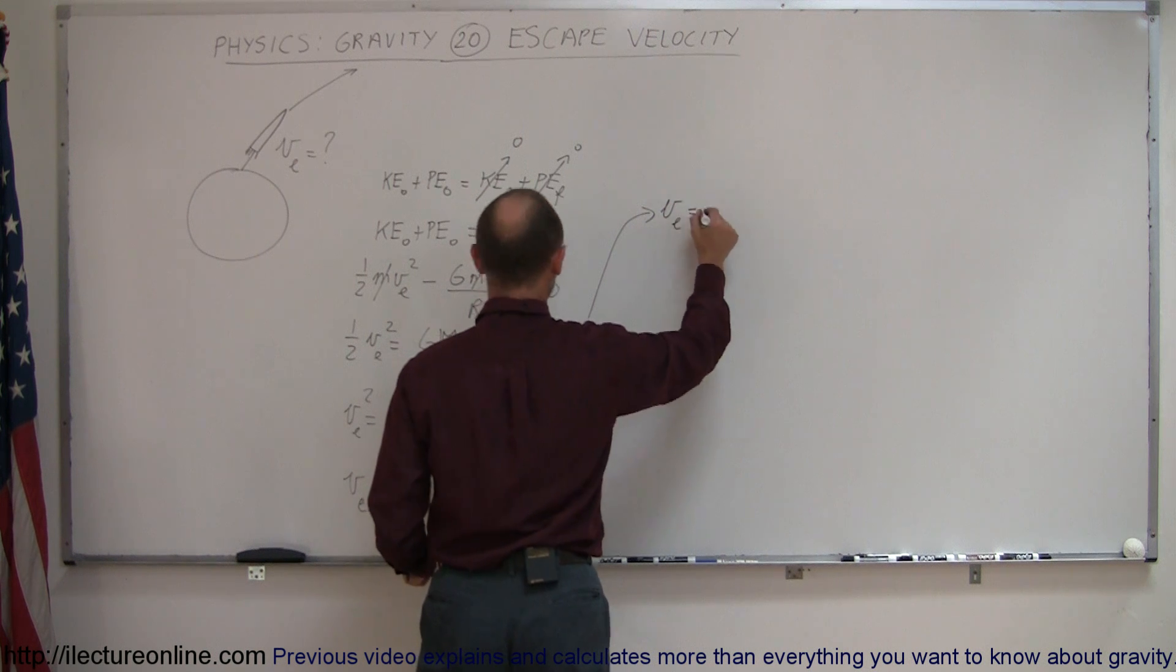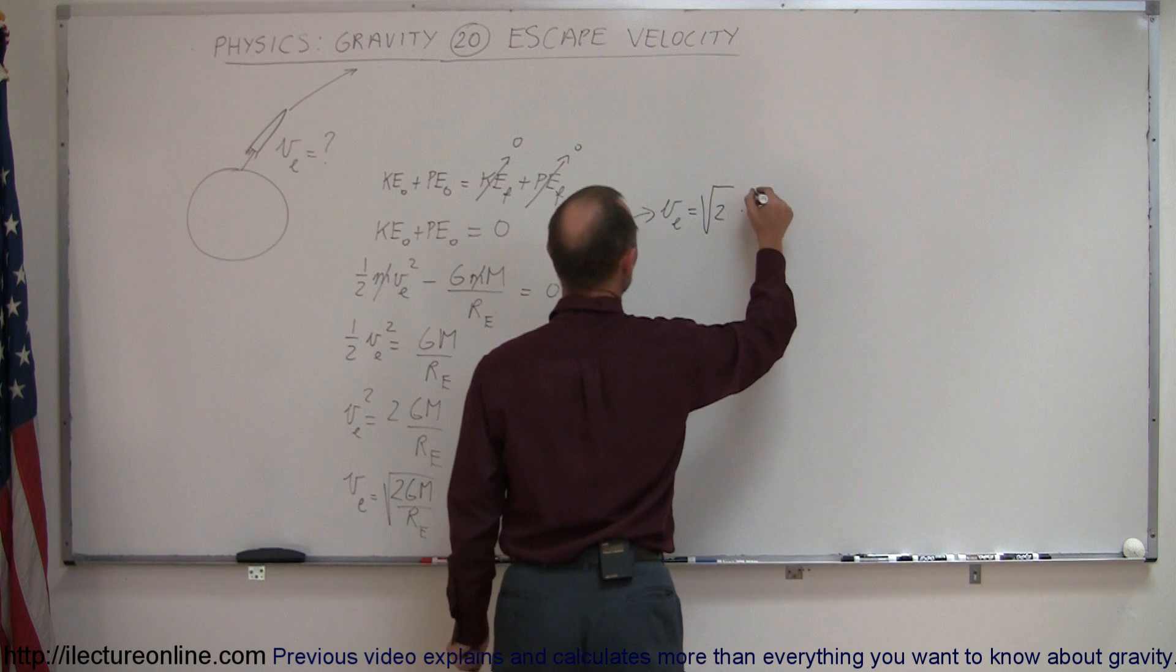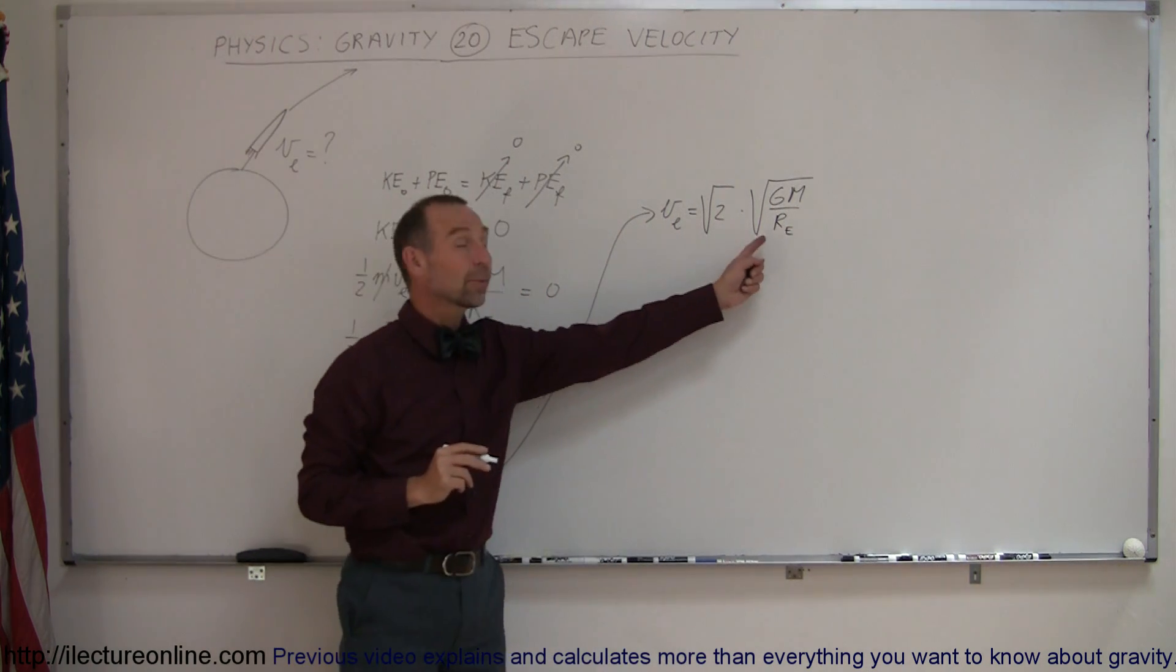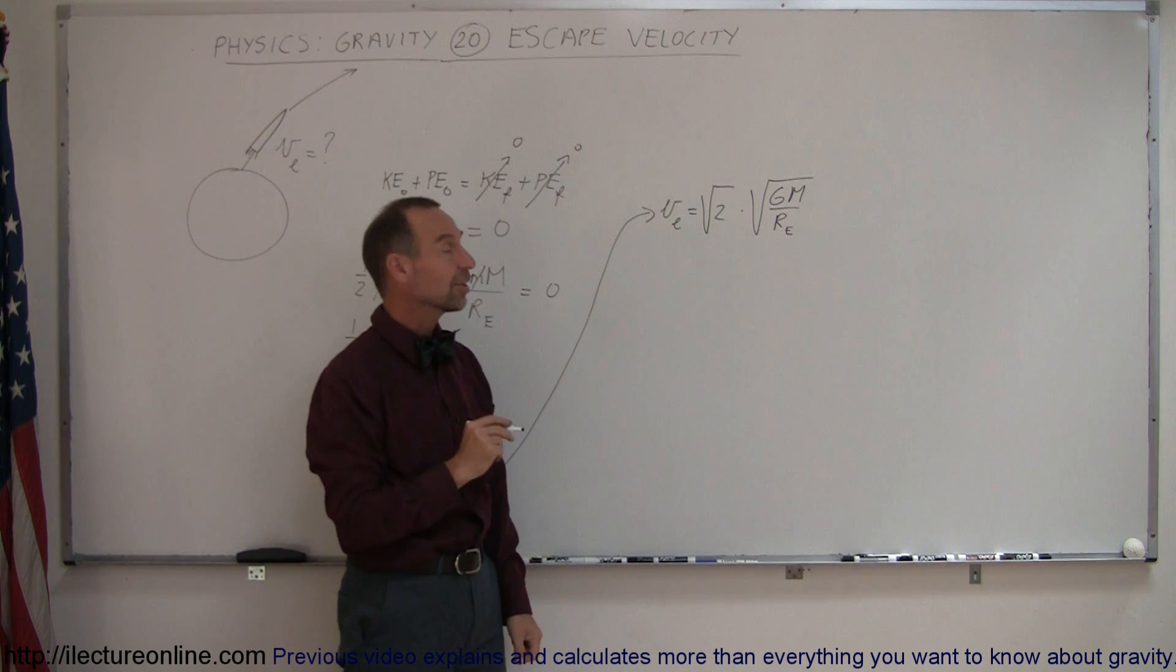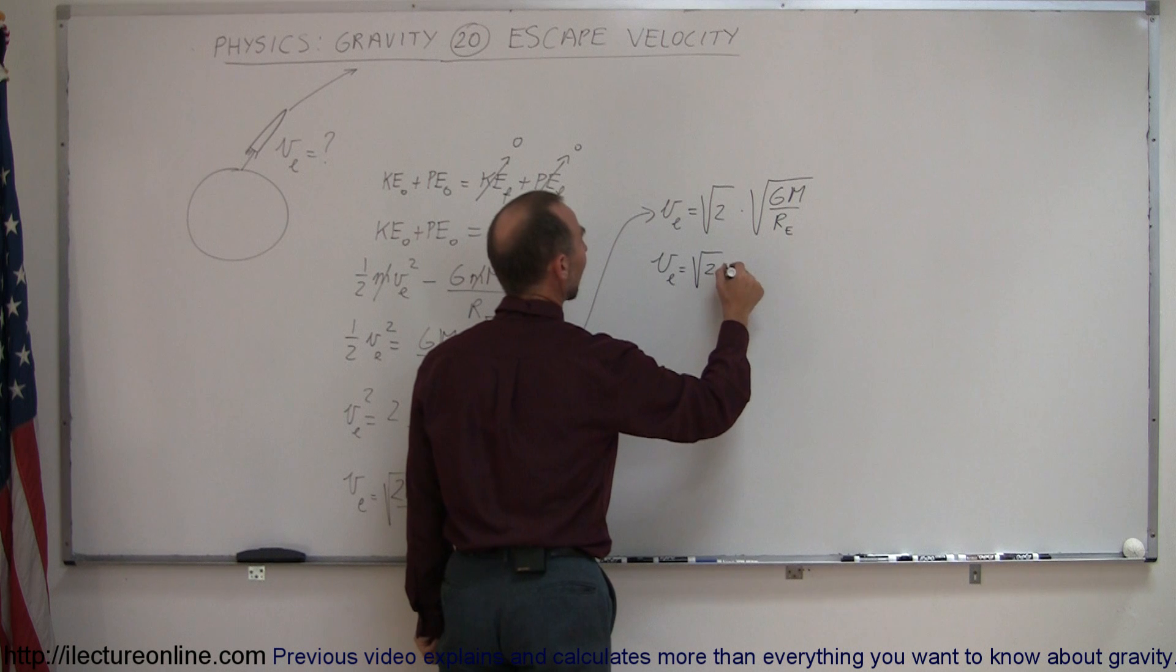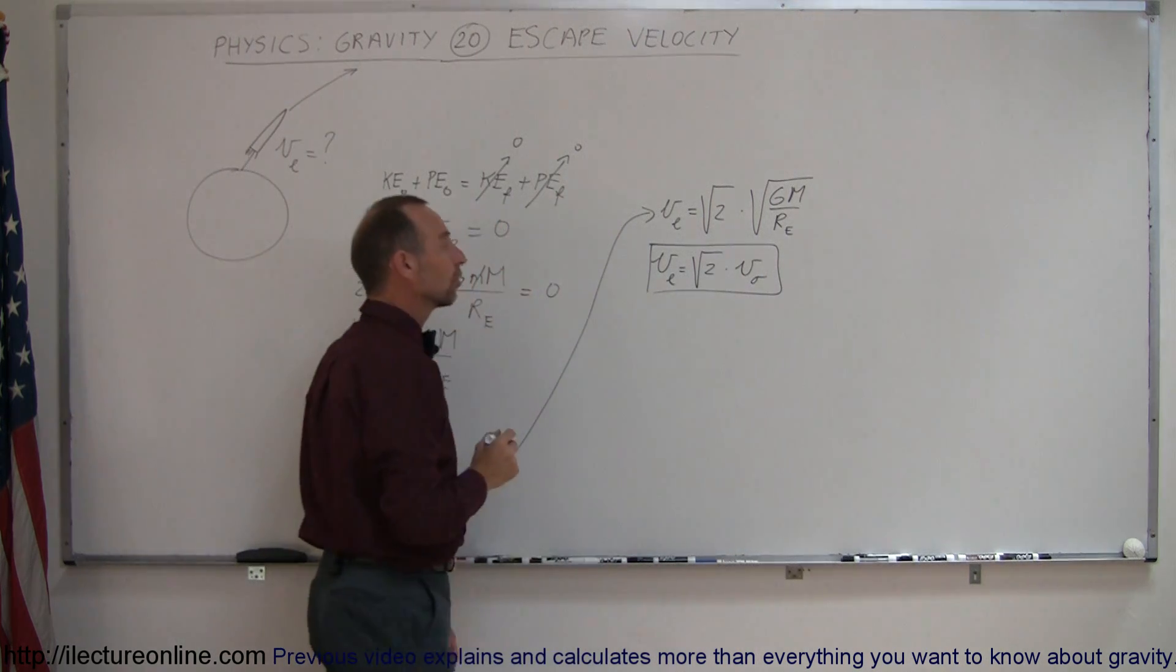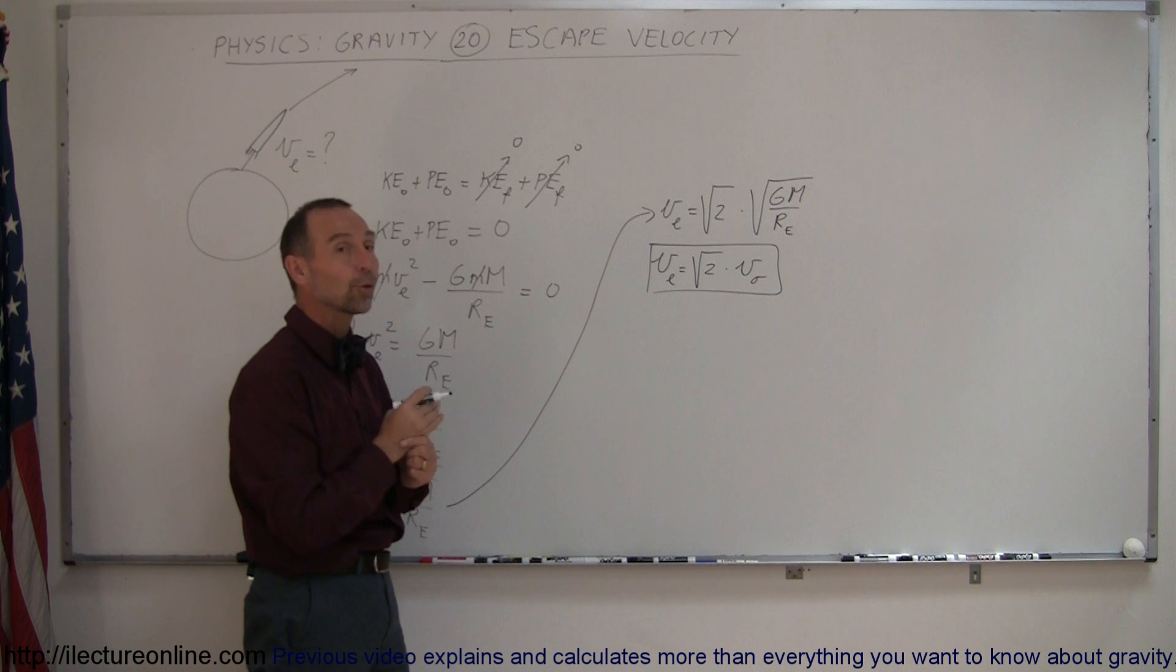Notice this quantity right here. What does it remind you of? That is actually the orbital velocity equation. So we can say that the escape velocity is equal to the square root of two times the orbital velocity of the Earth. And so that can now simply be an equation like that where the escape velocity is simply about 1.4 times the orbital velocity.